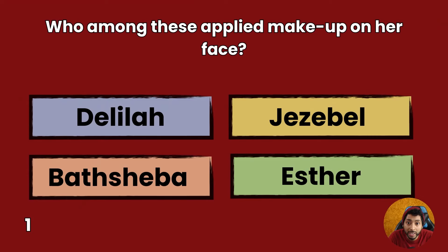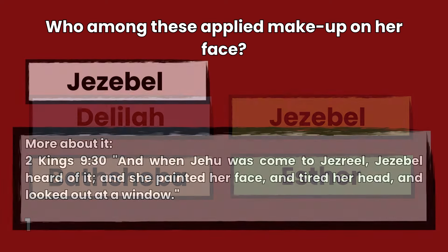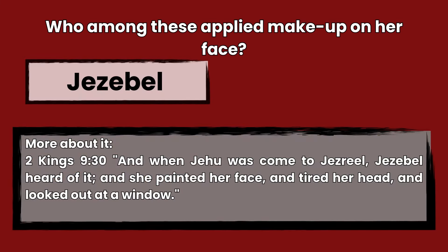Question 1: Who among these applied makeup on her face? Delilah, Jezebel, Bathsheba, or Esther? Answer: Jezebel. 2 Kings 9:30 — And when Jehu was come to Jezreel, Jezebel heard of it, and she painted her face and tied her head and looked out at a window.